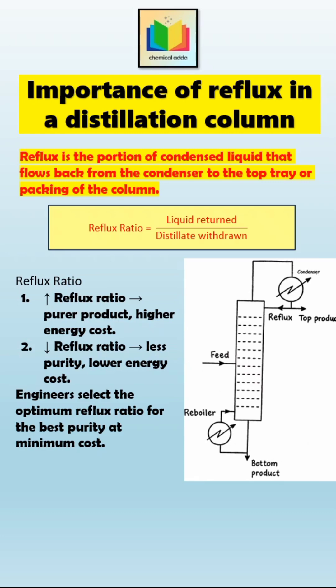In short, reflux improves the separation efficiency and helps to achieve higher product purity. It also reduces the number of trays or column height needed for a given separation. But too much reflux increases energy and operating cost. Therefore, reflux is the key to balancing purity, efficiency, and economy in distillation.